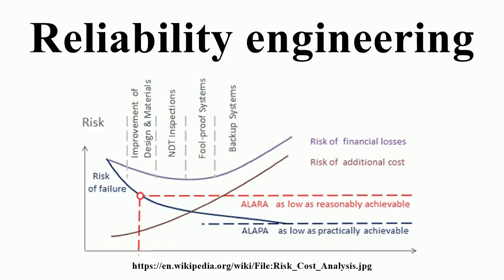In the 1960s, more emphasis was given to reliability testing on component and system level. The famous military standard MIL-STD-781 was created at that time. Around this period, the much-used Military Handbook 217 was published by RCA and was used for the prediction of failure rates of components. The emphasis on component reliability and empirical research alone slowly decreased, and more pragmatic approaches, as used in the consumer industries, began to be used.